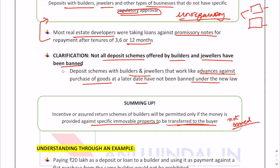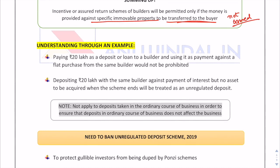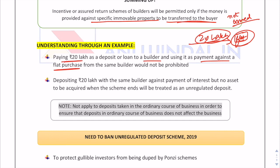The basic claim is that the ban targets unregulated deposits for businesses engaged in lending money like Ponzi schemes, to protect small investors. A loan taken for a business activity is exempt. For example, if you pay ₹20 lakh as a deposit to a builder against a flat purchase, that is not prohibited. But if you give ₹20 lakh to the same builder against payment of interest with no asset to be acquired when the scheme ends, that is considered an unregulated deposit — and jewelers and builders are highly impacted for this reason.